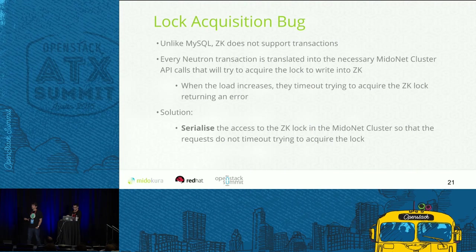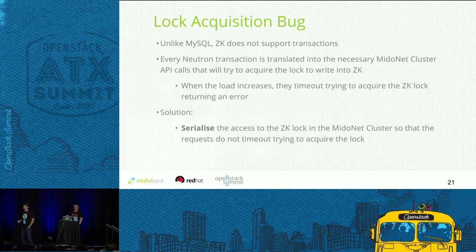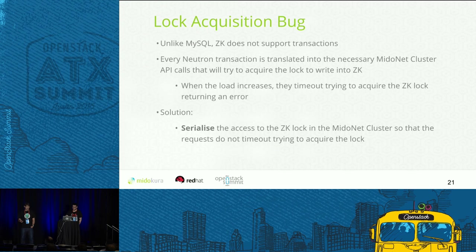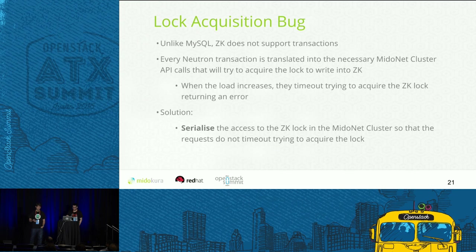So what was the bug causing this failure? Unlike MySQL, ZooKeeper does not support transactions. So every operation needs to acquire the lock to perform this translated Neutron operation into MioNet API calls. What happens is that these lock-acquiring operations time out, and so the SLA fails. The solution consists of serializing access to the ZooKeeper lock inside the cluster, so that requests don't time out acquiring the lock.